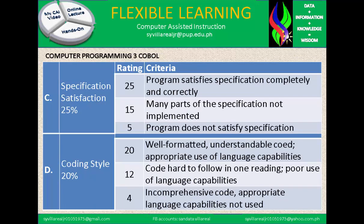C: Specification satisfaction, 25%. 25 when the program satisfies the specification completely and is correct. 15 for when many parts of the specification are not implemented. 5 when the program does not satisfy the specification. D: Coding style, 20%. Well-formatted and understandable code with appropriate use of language capabilities. 12 for code that is hard to follow in one reading with poor use of language capabilities. 4 for incomprehensible code where appropriate language capabilities are not used.